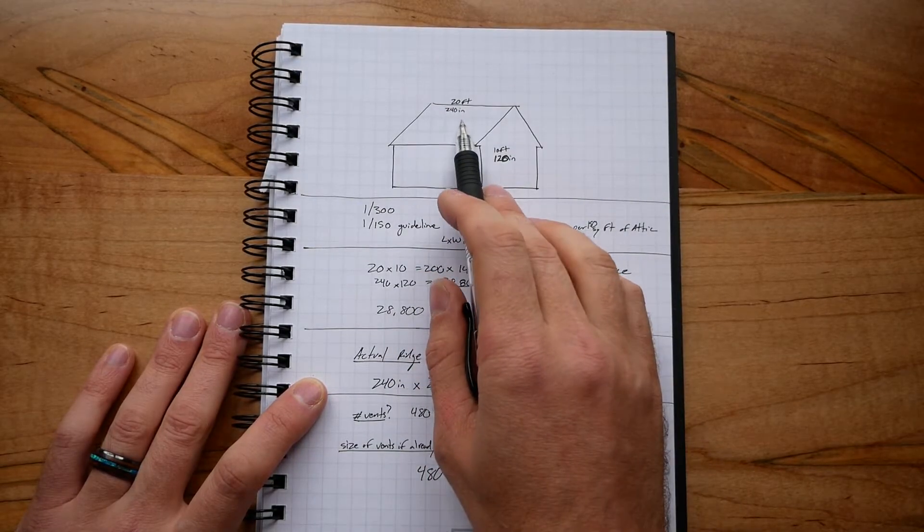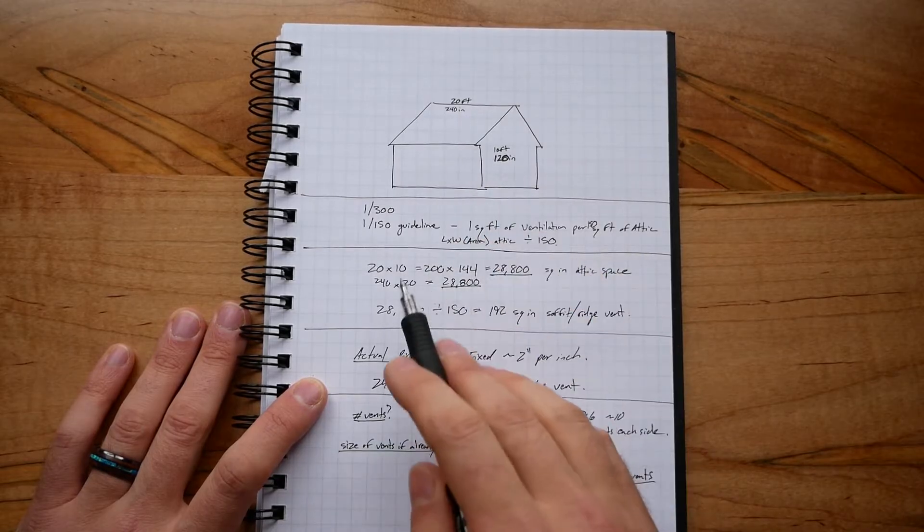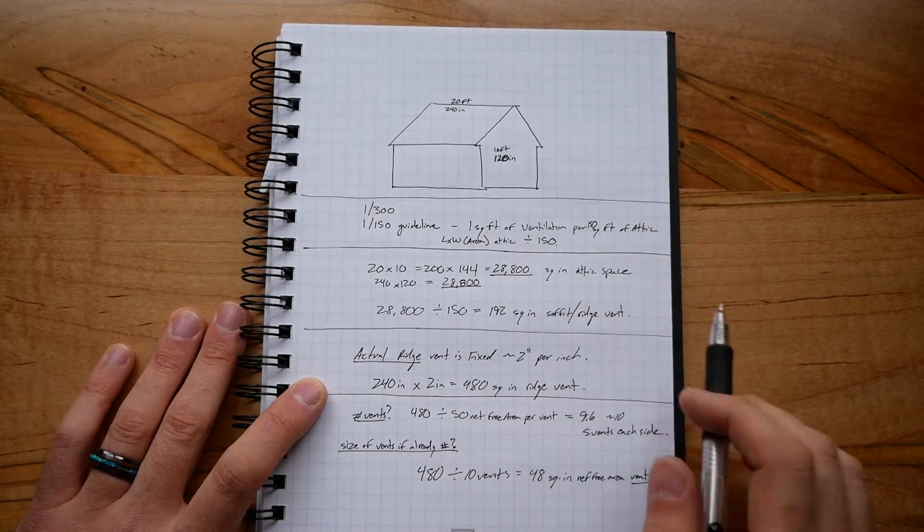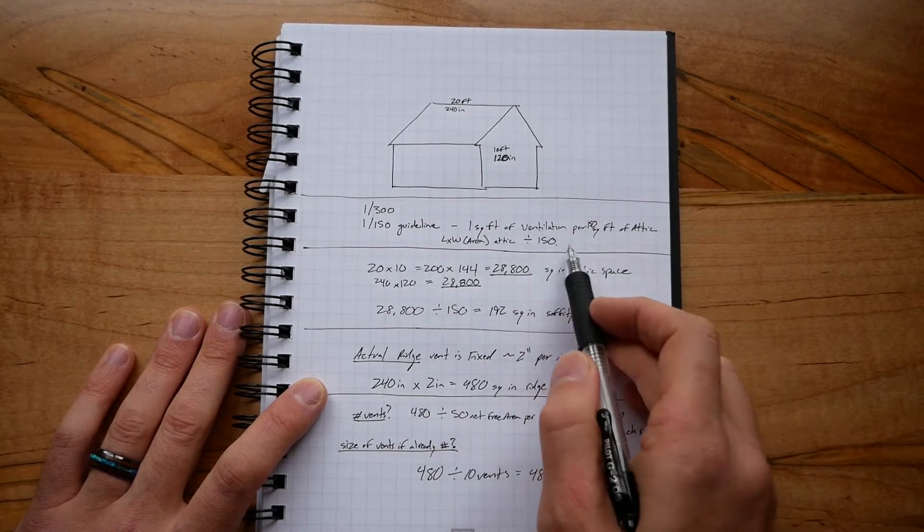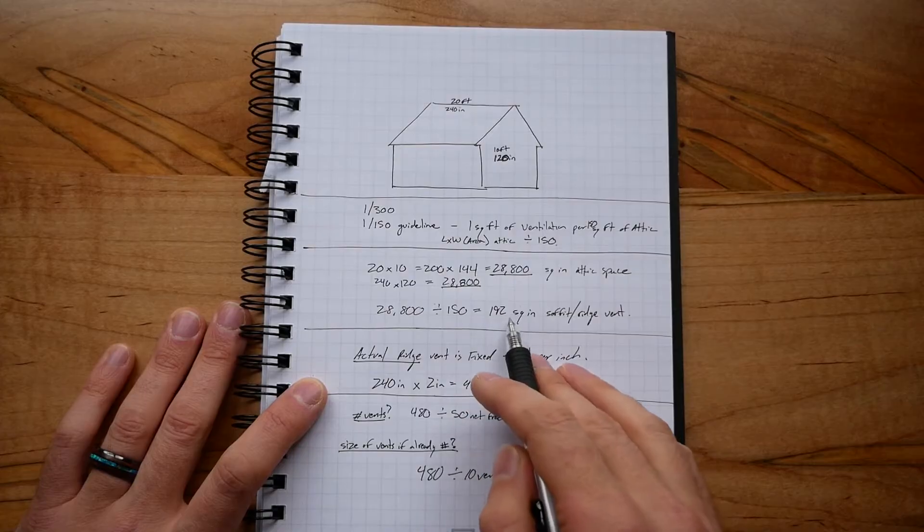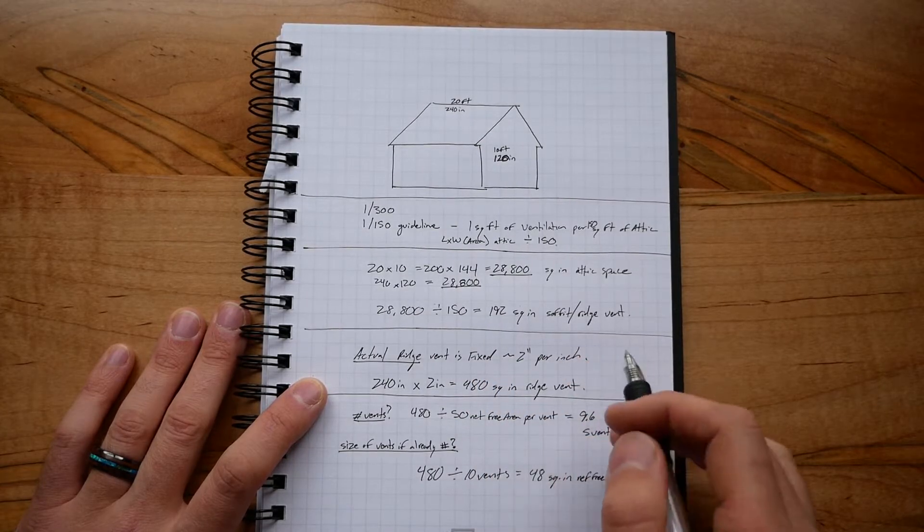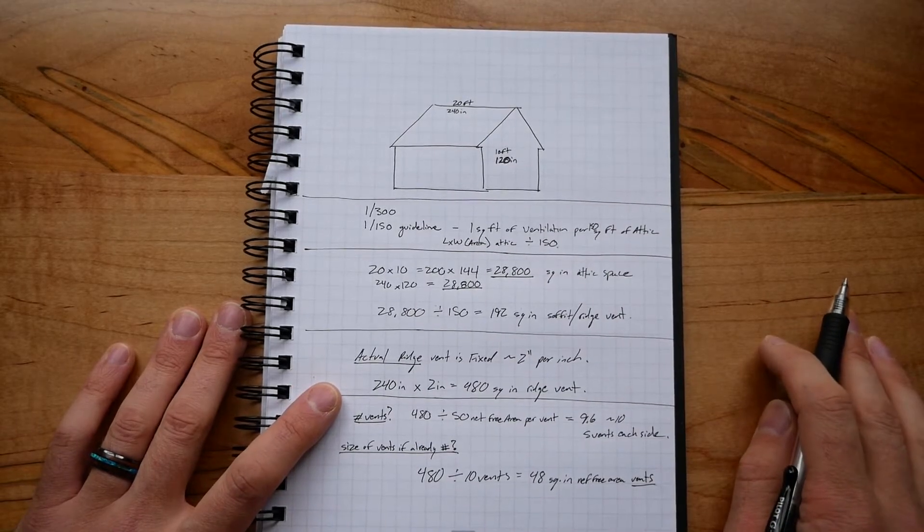You could also just do 240 inches by 120 inches to get 28,800 square inches of attic space, and then you just divide that by 150, and you get 192 square inches of soffit or ridge vent area that's necessary for ventilating.